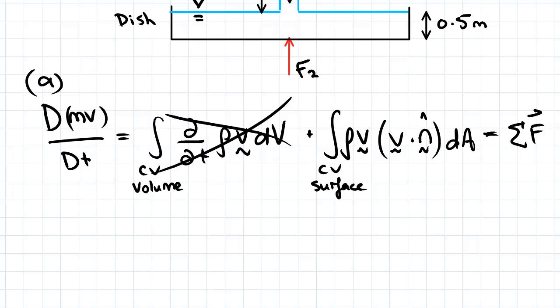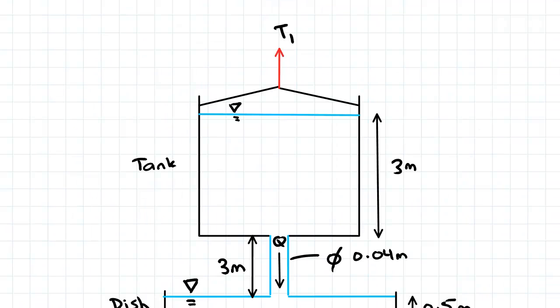So we've got to identify the control volume we're considering. So for part A we're considering the force due to the weight and the contents of the tank. So I'm going to take the contents of the tank as my control volume. That's my CV there.